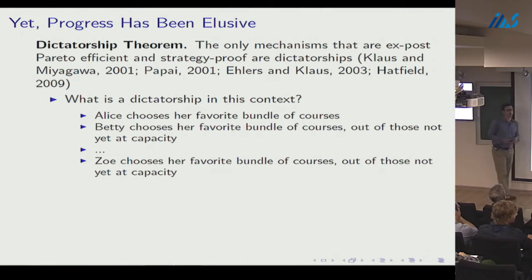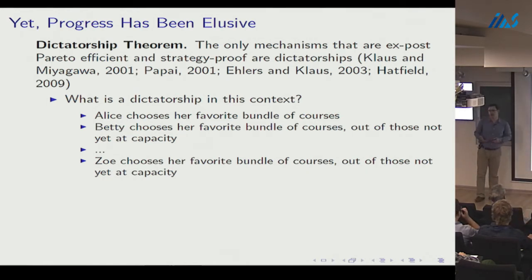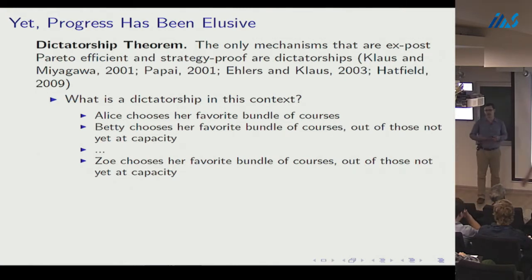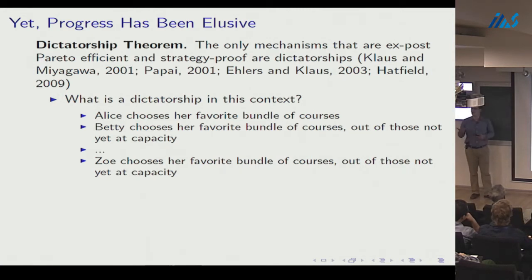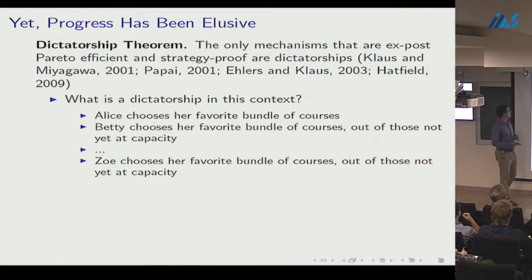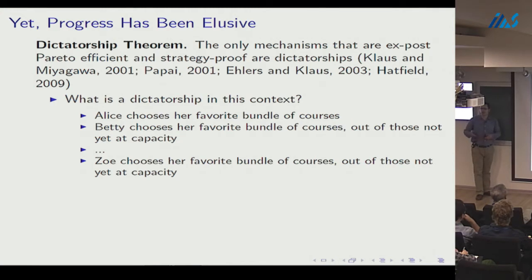The main reason progress has been elusive is a dictatorship theorem for combinatorial assignment. It says that the only mechanisms that are ex post Pareto efficient — meaning they don't leave Pareto-improving trades on the table — and that are strategy-proof — meaning it's a dominant strategy to report preferences truthfully — are serial or sequential dictatorships. There's a series of such theorems in the literature.